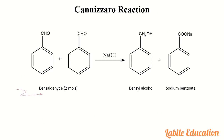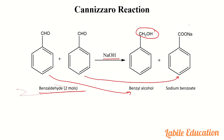Here you can see two molecules of benzaldehyde in the presence of a strong alkali like NaOH. One molecule is being reduced to alcohol and another molecule is being oxidized into carboxylic acid. Because the medium is alkaline, we get the sodium salt of benzoic acid. This is an example of the Cannizzaro reaction. Disproportionation reactions are those in which one molecule is reduced and another molecule of the same compound is oxidized — this is called a self-reduction and oxidation reaction.